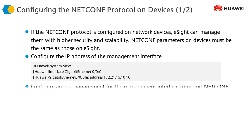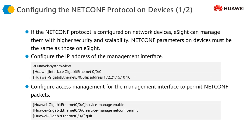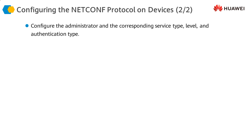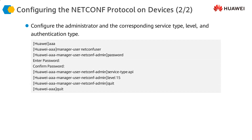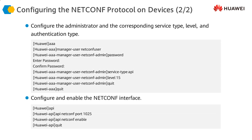Similarly, we can configure NetConf as well — the configuration is similar. We enable NetConf on the interface and allow NetConf traffic to be exchanged through that interface. We then configure the NetConf password and the NetConf API privilege level, which is 15, meaning it has the highest privilege level for accessing the required information.